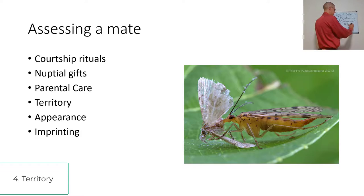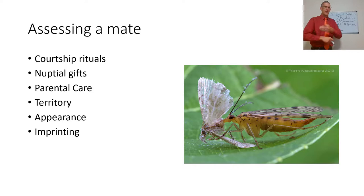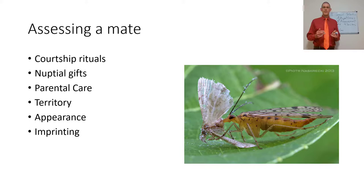Territory is another form of assessment. A buck that can defend his turf — say, one that holds and trots across an entire campus with magnificent antlers held high, chasing away any other males — has a good territory. And that territory is the perfect place for raising fawns. The male that is able to hold that territory is going to be providing an environment suitable for the female.